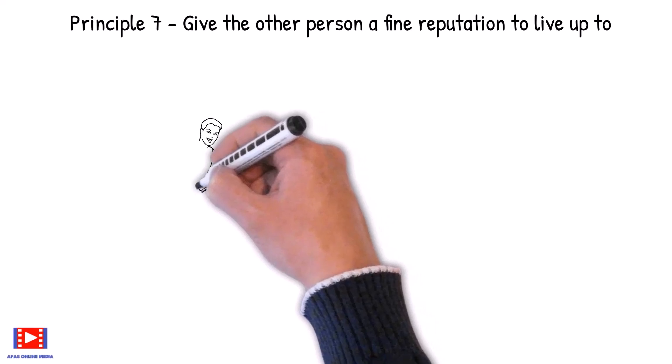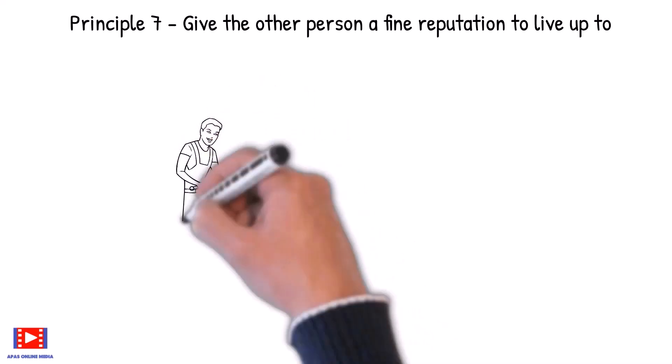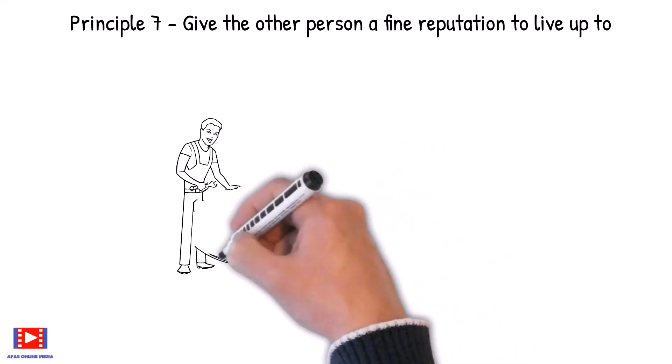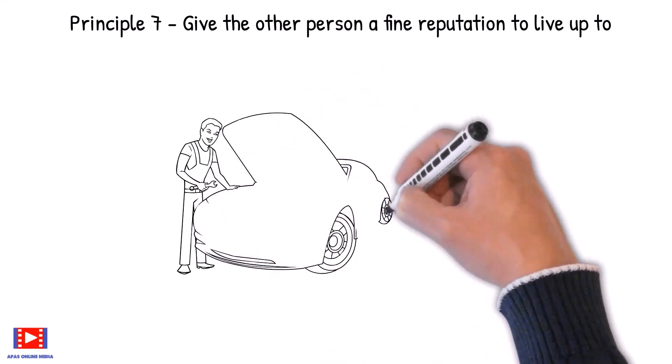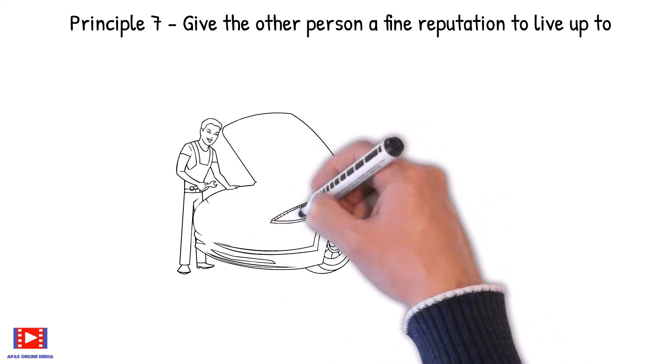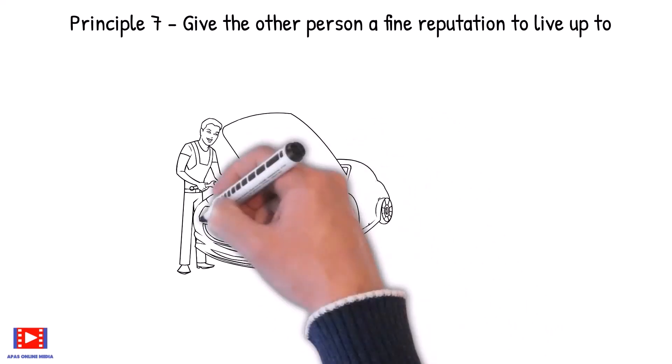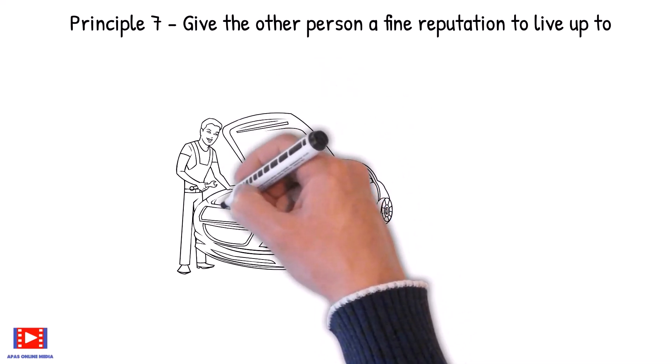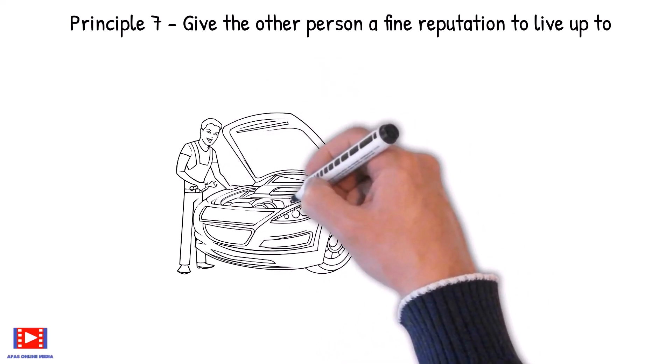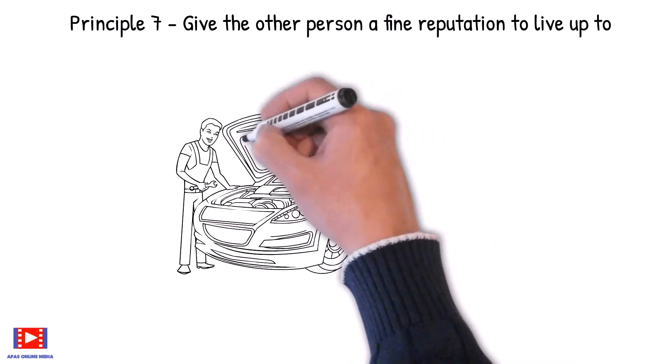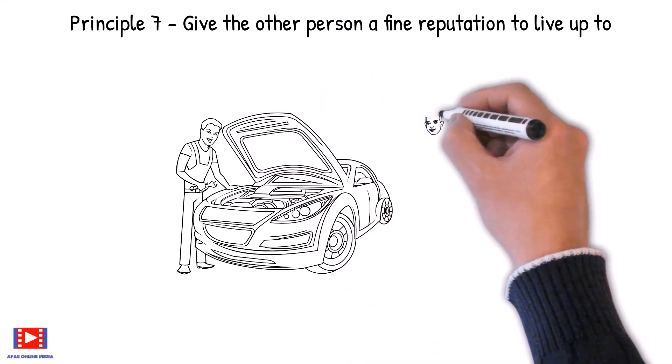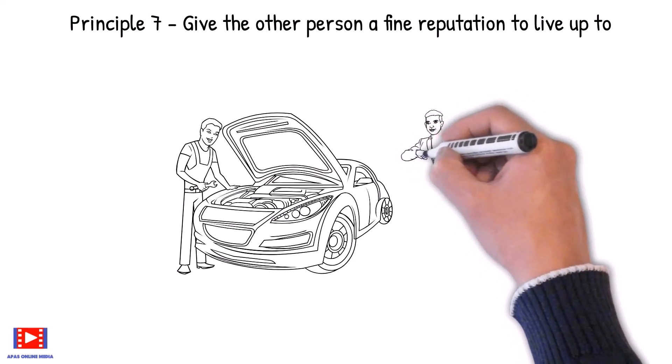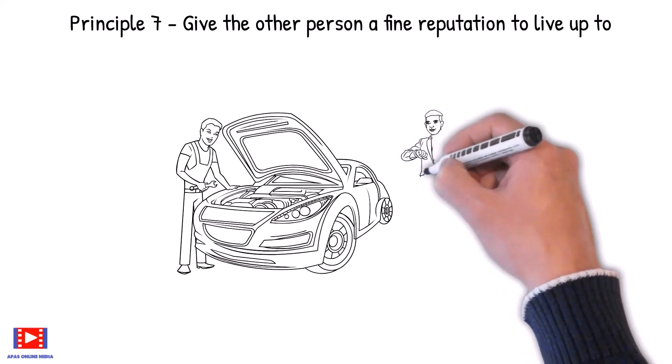Principle 7: Give the other person a fine reputation to live up to. What do you do when a person who has been a good worker begins to turn in shoddy work? You can replace that person with someone else, but that really doesn't solve anything. Instead, a leader should always talk heart to heart with that person. Tell that person of their own achievements in their own line of work.